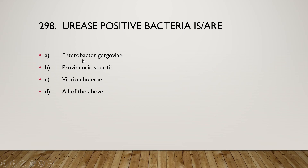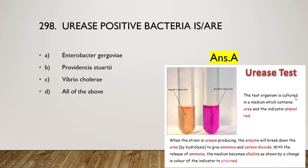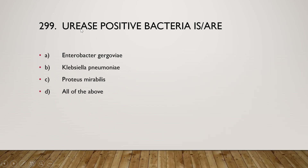The next question is: urease-positive bacteria is/are (A) Enterobacter gergoviae, (B) Providencia stuartii, (C) Vibrio cholerae, or (D) all of the above. The right answer is option A — Enterobacter gergoviae. In the urease test, the organism is cultured in a medium containing urea and phenol red. If urease is produced, the enzyme breaks down urea to produce ammonia and CO2; the ammonia increases alkalinity and turns the medium pink-red.